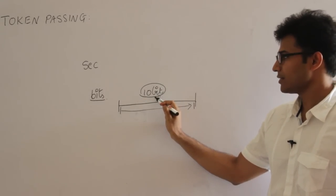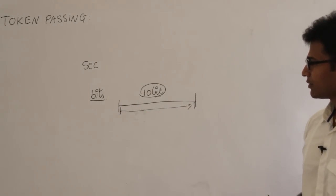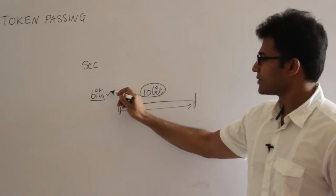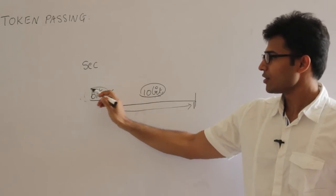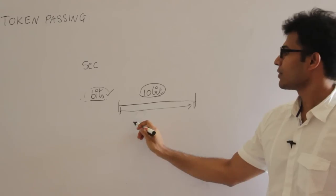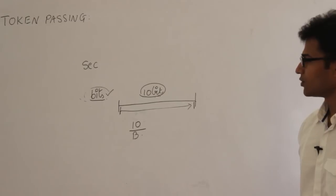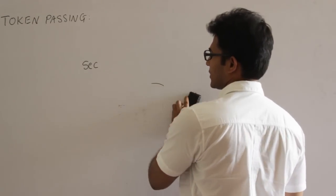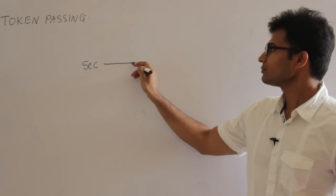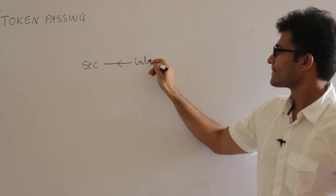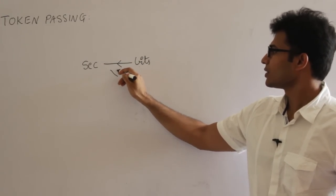So if the time is given in bits, always remember that you should convert it into transmission delay for that many bits in order to get into seconds. To find out the transmission delay for 10 bits, divide by bandwidth. If the time is given in bits — also called bit times — to convert bits to seconds, divide with bandwidth.